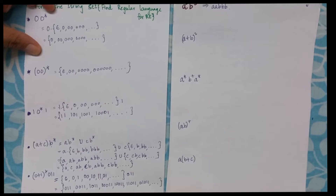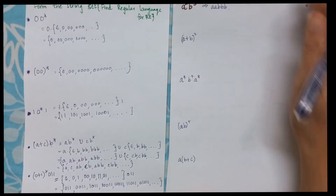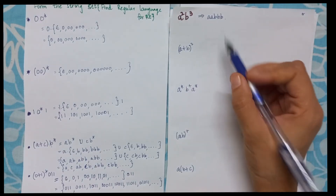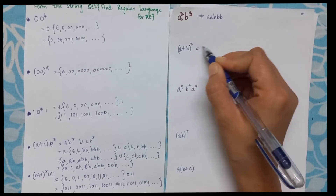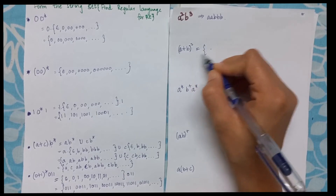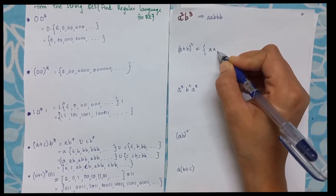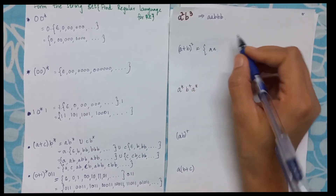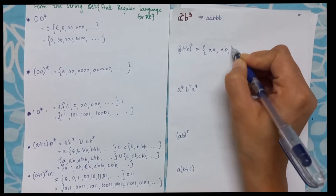If I have a²b³, then it will be two a's followed by triple b. If I have (a+b)² then that means it indicates strings of length 2, so it will have aa, ab, ba, bb — only these are possible.